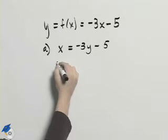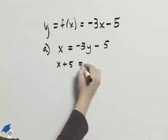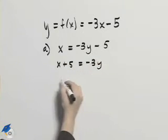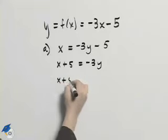We'll add 5 to both sides and we'll have x plus 5 equals negative 3y. We'll then divide both sides by negative 3.